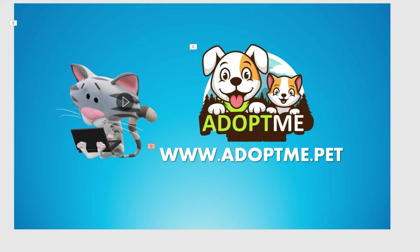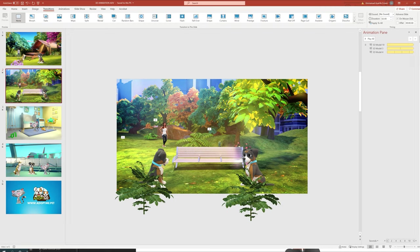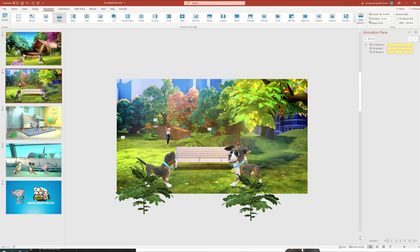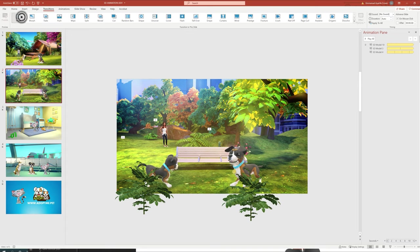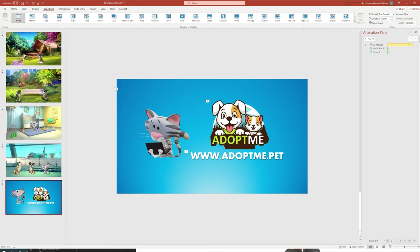We have two more things to take care of before completing this promo. The first are the transitions between scenes. I cover this extensively in my previous video so I'm not going to go much into it, but my one tip is that when doing 3D animations I like to keep transitions very simple — a hard cut or a simple fade. For this particular promo the only place I'm putting a transition is going from the park into the final call to action, and I think the Airplane transition effect is an interesting one that fits well here.